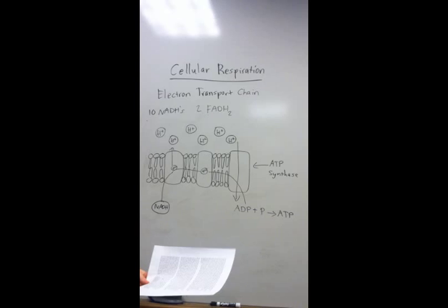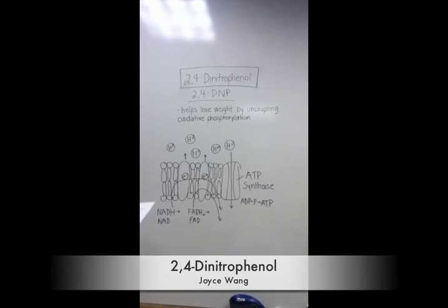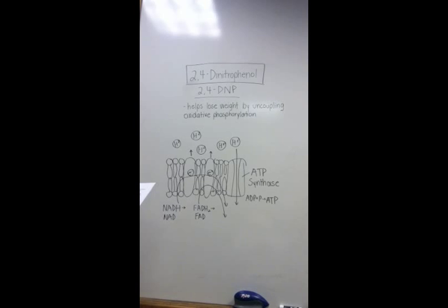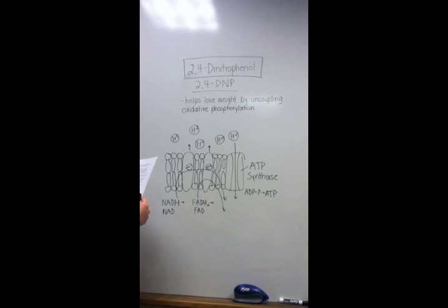So now we'll be looking at the thermogenic uncoupler called 2,4-dinitrophenol or 2,4-DNP for short. It's a molecule that's said to help people lose weight by uncoupling oxidative phosphorylation. So what does uncoupling phosphorylation mean?